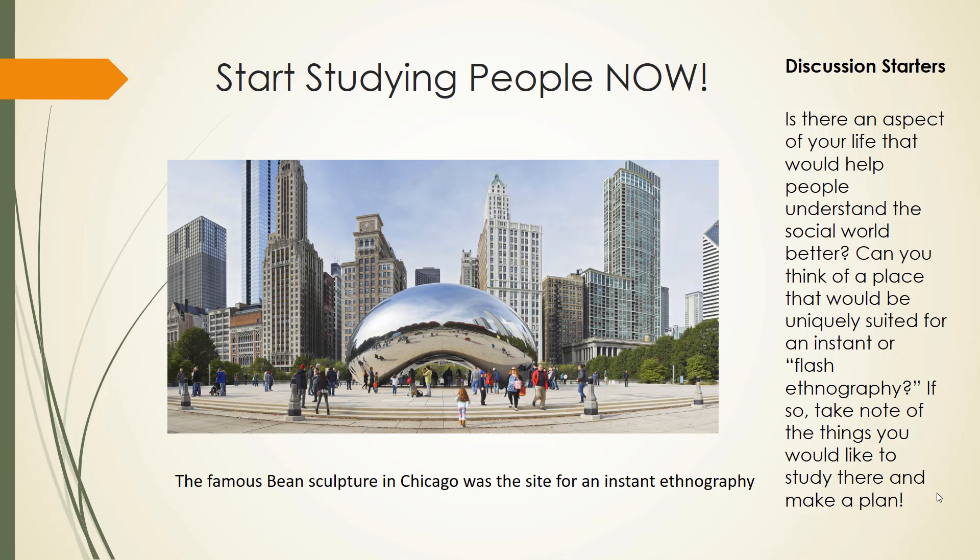Start studying people now. There are at least two ways that you could start studying people now with no money or support whatsoever. First, there is the auto-ethnography — simply the application of ethnography from the first person perspective. Is there some aspect of your life that is unique and you think would help other people understand the social world a little bit better? Maybe you have a characteristic that people associate with you, for instance, a missing limb. If so, explore that aspect of your life. Take notes after you interact with people, how they relate to you with that characteristic, and how you feel as you're interacting with other people.